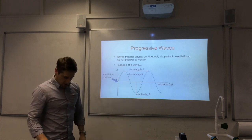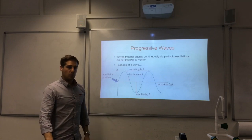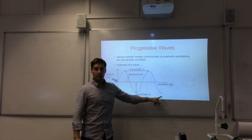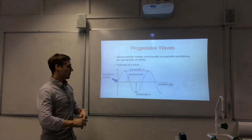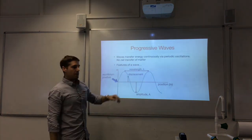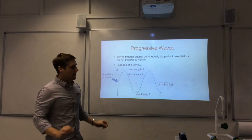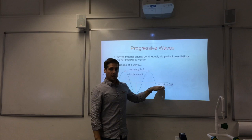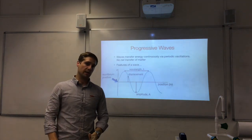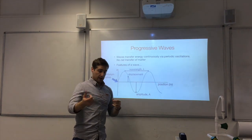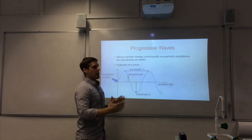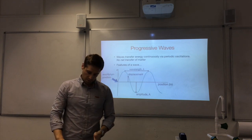Wavelength is the distance between two consecutive points that are in phase. Two peaks are good candidates — they're both at maximum positive displacement. When measuring wavelengths or the period, it's a good idea to measure several wavelengths and then divide by the number you measured. So measure five wavelengths and then divide by five — try to use a few.